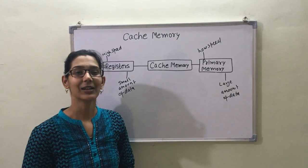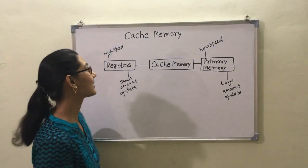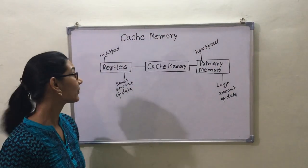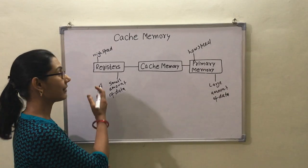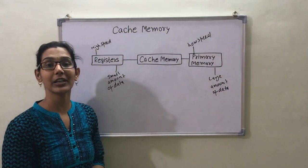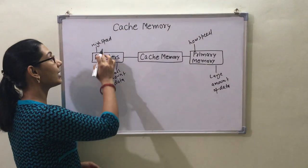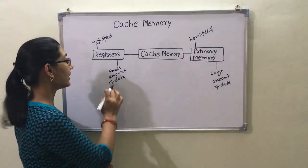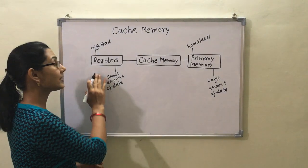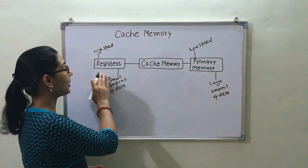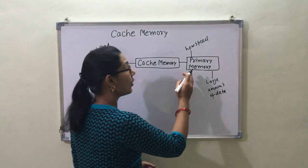Hello everyone, welcome to the channel Knowledge 24. Today we will discuss the topic of cache memory. In our computer system we have different memories like registers, cache memory, primary memory, secondary memory, etc. Registers are high-speed memory with a small amount of data, and registers reside in the CPU, so they are very high in speed.